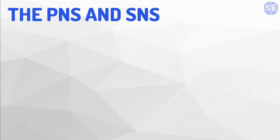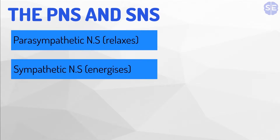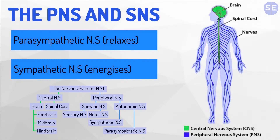Finally, the parasympathetic nervous system and sympathetic nervous system. The sympathetic nervous system gets the body pumped up and ready, giving you energy, while the parasympathetic nervous system calms the body down and helps it relax. It's also worth mentioning that internal body functions, such as digestion, are also controlled by the parasympathetic nervous system.